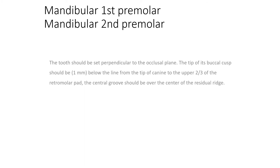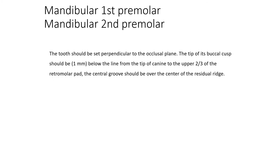The mandibular first premolar and the mandibular second premolar — the tooth should be set perpendicular to the cruiser frame as determined from the cast or any other reference. The tip of the buccal cusp should be 1 mm below the tip of the canine.